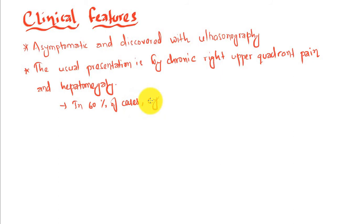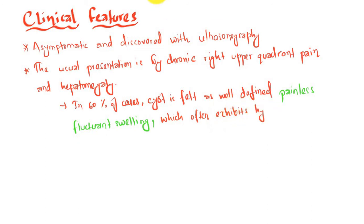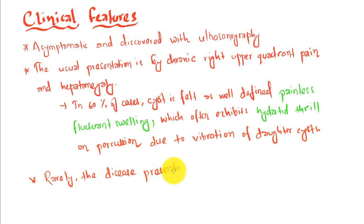The usual presentation is by chronic right upper quadrant pain and hepatomegaly. In 60% of cases, cyst is felt as a well-defined painless fluctuant swelling, which often exhibits hydatid thrill on percussion due to vibration of daughter cysts. Rarely, the disease presents by its complications.